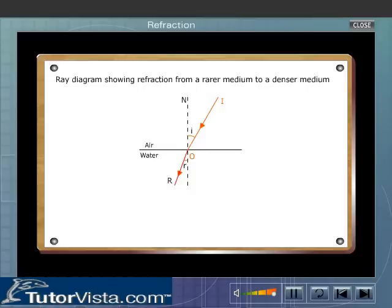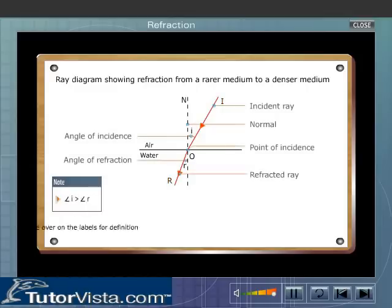Here IO is the incident ray, OR is the refracted ray, I is the angle of incidence and R is the angle of refraction. For definition, mouse over on the labels.